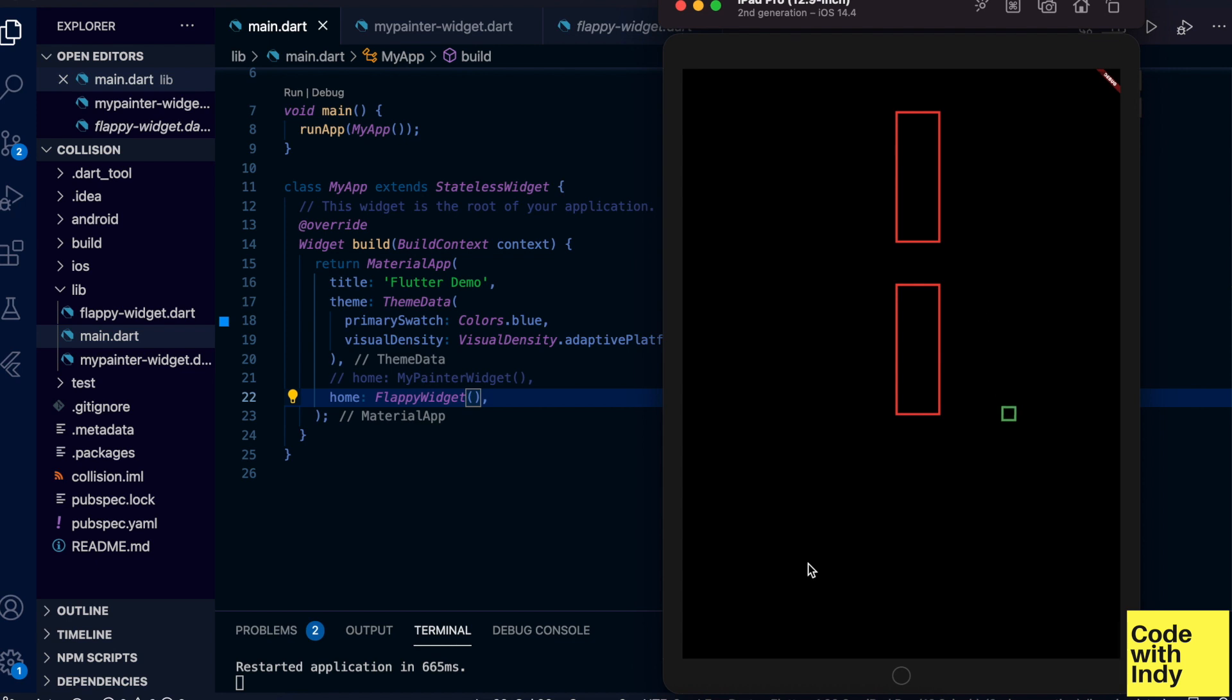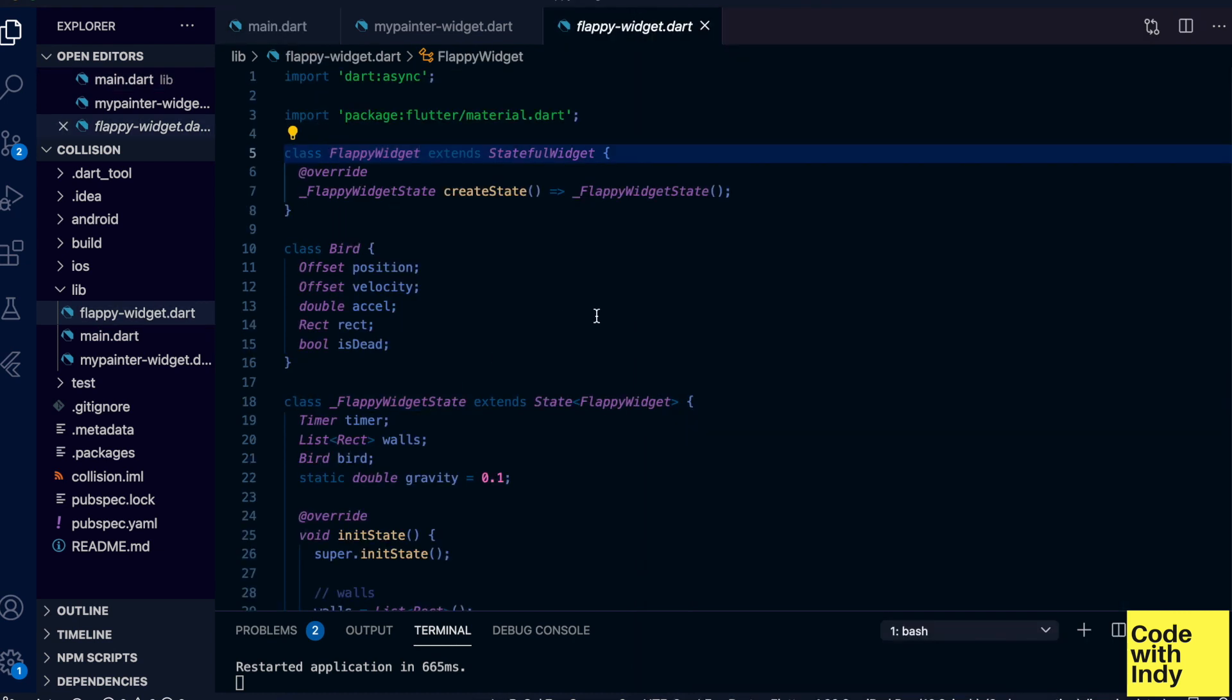Here's what it looks like. Whoa, that's a fluke. I'm crappy at this normally. Imagine, if you will, the green box is the bird we control by tapping on the screen, and the red boxes are obviously walls.